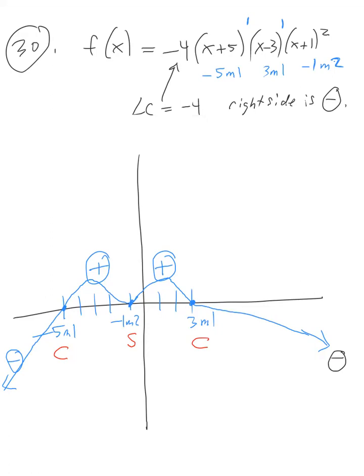We've labeled each x-intercept, used the multiplicities of zeros and the leading coefficient test to determine end behavior, and shown the sign of the function between each intercept — whether the graph crosses through or bounces back. This concludes the college algebra final exam review. Good luck, and God bless — I hope you do very well.